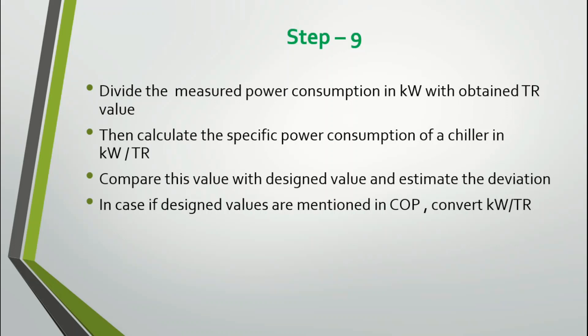Some suppliers provide performance or design efficiency values in COP instead of kilowatt per TR. Since our measurement gives kilowatt per TR, it is important to convert COP to kilowatt per TR for comparison. The conversion formula is: kW/TR = 12 / (COP × 3.412). Insert the COP value to get the kilowatt per TR equivalent, then compare with the measured kilowatt per TR and find the deviation.